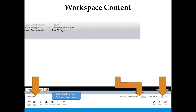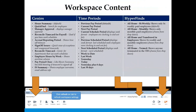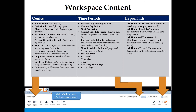On your workspace you have Genies, time periods, and hyperfines, and you can change the context. Your default Genie is Hour Summary. Other available Genies include: QuickSign, which allows you to search for employees; Manager Approval, which displays the manager that has approved the time card; Reconciled Time Card for Payroll, used if you have work schedules; and Accrual Reporting Period, which shows time off balances.